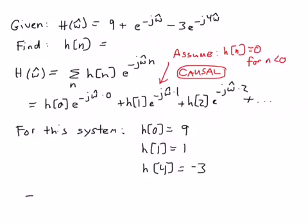So I could sketch this, and I'd have 9 at 0, and I'd have 1 at 1, and then I'd have a minus 3 at 4. And I'd have 0 values at 2 and 3 in between there. And it's 0 everywhere else because there are only 3 terms in that summation.